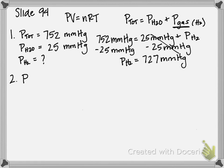So our pressure, which is what we just solved for, is 727 millimeters of mercury. Our volume, it states in the problem, is 0.355 liters. Our moles, that's what we're looking for.